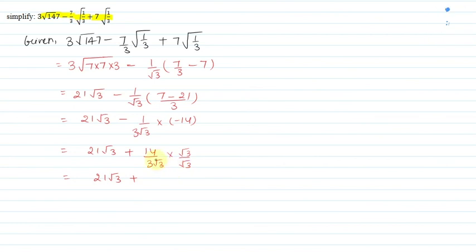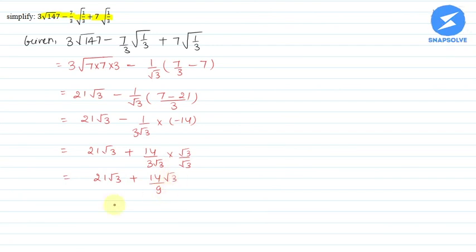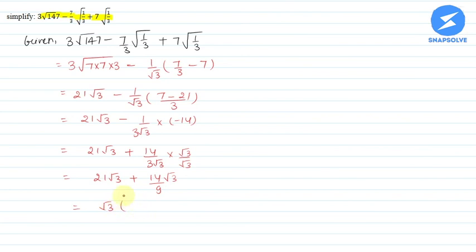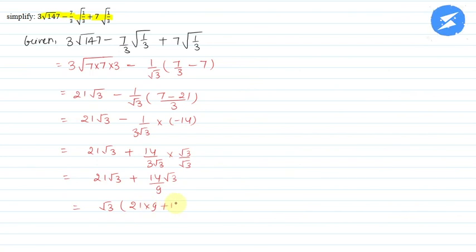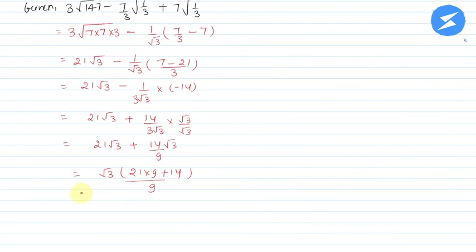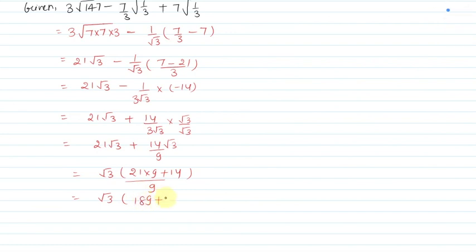We get 14 upon root 3 into root 3, that is 3. And 3 into 3 is 9. So we get 14 root 3 upon 9. Taking root 3 common, we get 21 plus 14 upon 9. Taking LCM, we get 21 into 9 plus 14 upon 9. So root 3 into (21 into 9 + 14) upon 9. That is 9×21 = 189, and 189 plus 14 upon 9.